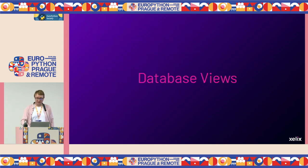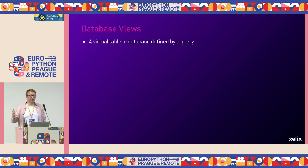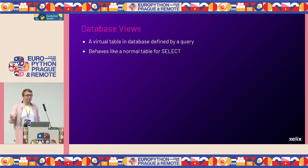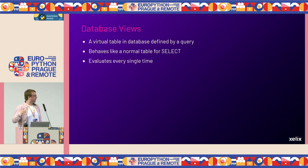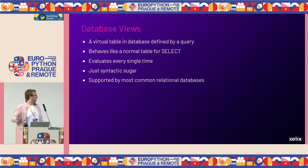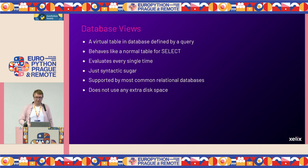This is where database views come in. A database view is a virtual table in a database defined by a query. It behaves like a normal table when selecting — from looking at the SQL you wouldn't necessarily even know it's a database view. It evaluates every single time, so it doesn't necessarily help with speed. It's essentially just syntactic sugar, supported by most databases, and it doesn't use any extra disk space.